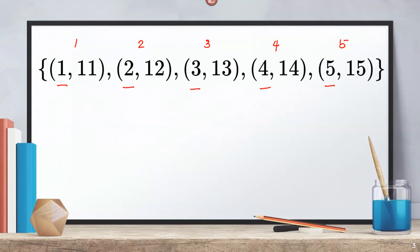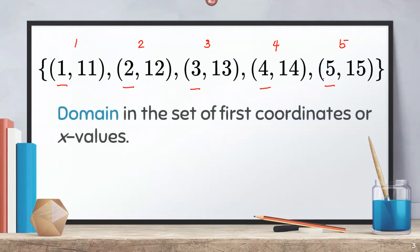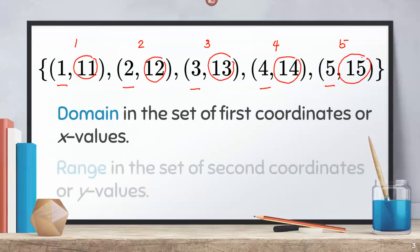This set of x-coordinates is called the domain. On the other hand, the y-coordinates are 11, 12, 13, 14, and 15. The set of y-coordinates is called the range.